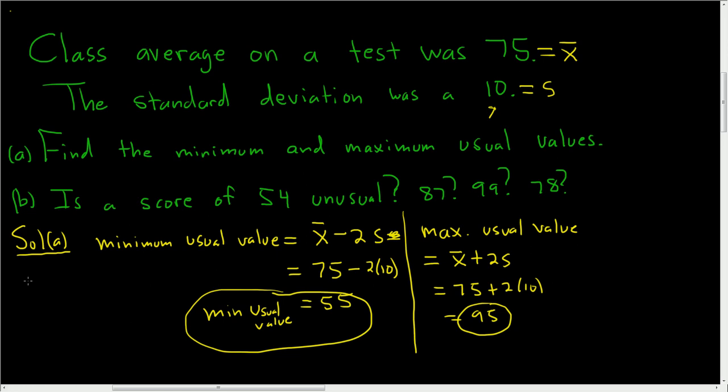Now we can answer the other questions. The solution to part b asks: is a score of 54 unusual? 87? 99? 78? In part a, we determined that the minimum usual value was 55 and the maximum usual value was 95.